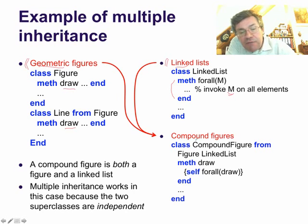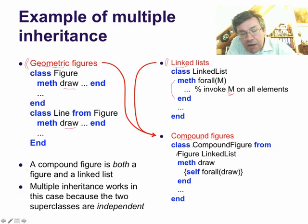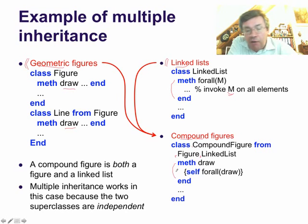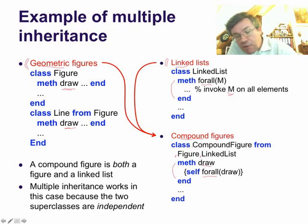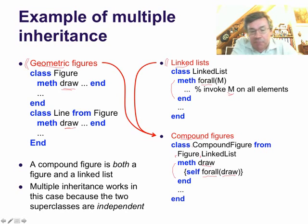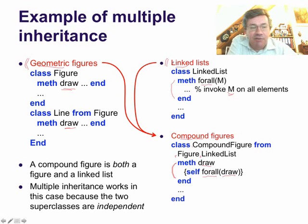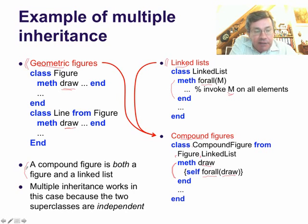From these two, we can define by multiple inheritance compound figures. Compound figure inherits from figure and from linked list. Now notice here we have defined the method draw, just like all figures which have method draw. And in order to define method draw, we use the method for-all, which comes from linked list, and the argument here is draw, because each of the figures is going to be used as a figure. Notice how this method draw draws from both superclasses — linked lists and geometric figures.